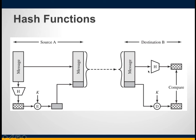The figure shows the message going through the hash function to produce a code, which is appended to the message. However, unlike a MAC, a hash function does not take a secret key as input. The figure illustrates how messages can be authenticated using a hash function — the message digest can be encrypted using a key K shared only between the sender and receiver, which also assures authentication.